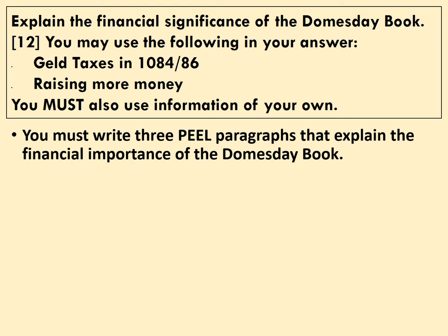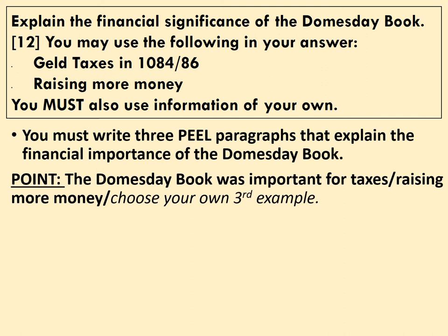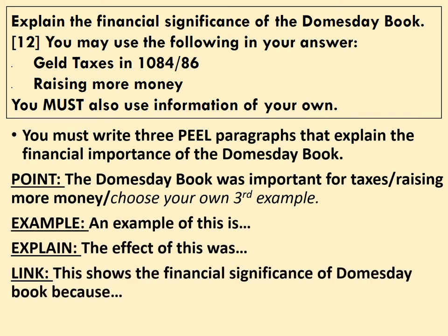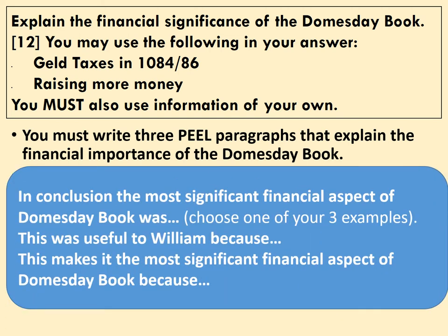How you choose to do this is up to you, but here's a writing frame as a hint: make a point about the Domesday Book and why it was important for taxes and raising money, choose your own third example after the other two, then give an example, explain it, and link it back to the question. That link is crucial — you need to do the links to get those AO2 marks for explanation and analysis. There are six marks for knowledge and six marks for analysis, making twelve total. You should spend between 15 and 18 minutes — no longer than 20 unless you're entitled to extra time. Don't forget to write a conclusion giving which aspect of the Domesday Book was most important.